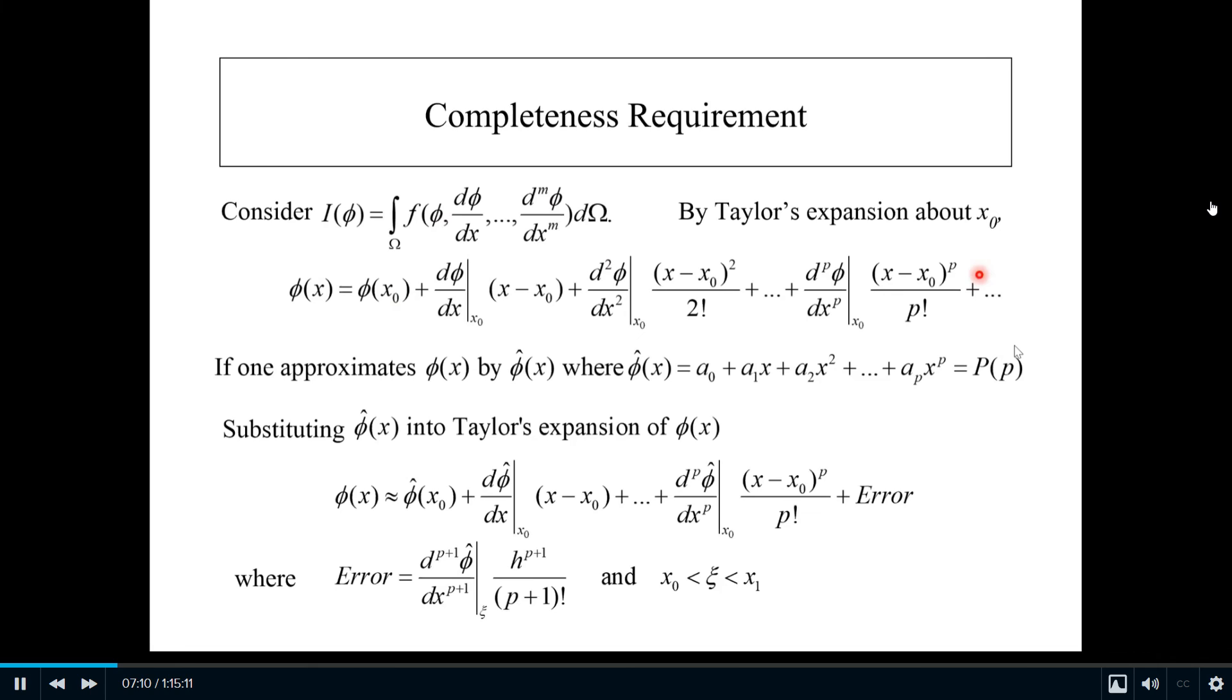If we approximate phi as phi_hat using a polynomial of order p like this, and then put this phi_hat back into the Taylor expansion, the approximate solution will become like this. This means we should stop at this term because after this you get nothing—we have only a polynomial up to order p. So we get a truncation error of this approximation. This error can be approximated as something like this—the order of error is about this.